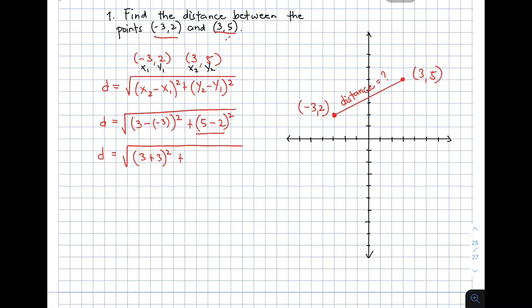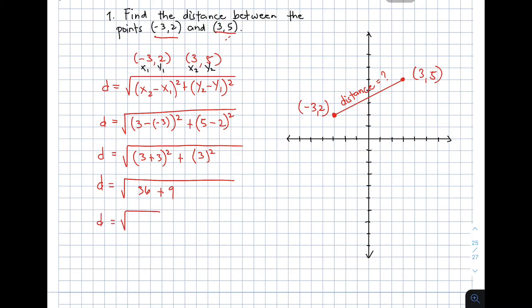Simplifying this radical, we have d is equal to the square root of 3 — and then negative times negative gives you positive — so plus 3, raised to 2, plus 3 squared. Simplify: you have d is equal to the square root of 6 squared plus 9. This 6 squared is equivalent to 36. Simplify: your d is equal to the square root of 45. We can accept this answer, but normally we need to simplify the radical. Simplifying, square root of 45, this will give you d is equal to 3 square root of 5 units.